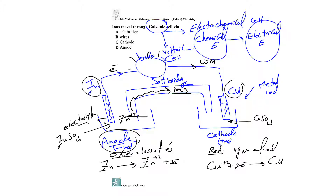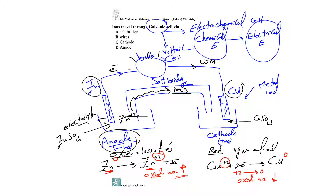Keep in mind: in oxidation, the zinc atom turns into zinc ions — the oxidation number for a neutral atom is zero, and it becomes positive two. In an oxidation process, the oxidation number increases — it was zero and becomes positive two. In reduction, the ions go from positive two back to atom zero — so the oxidation number decreases from positive two to zero.